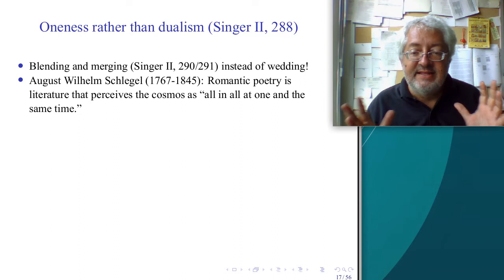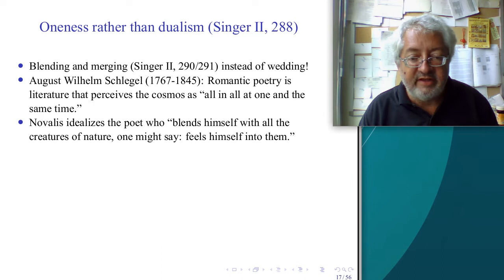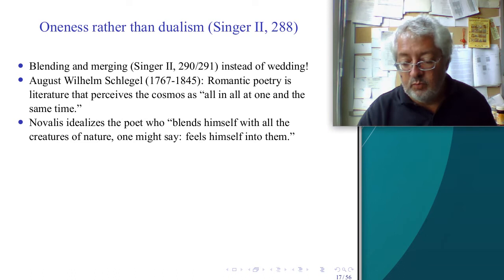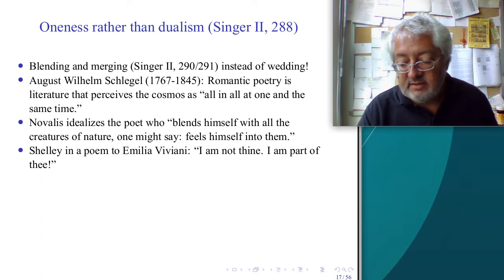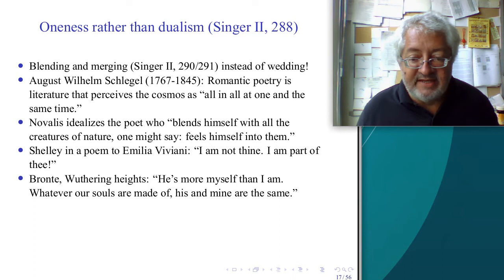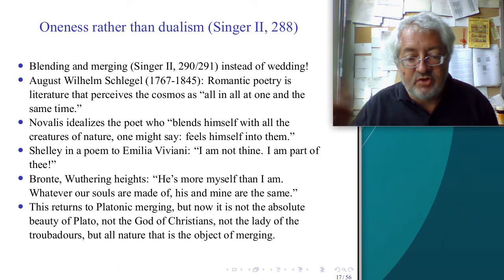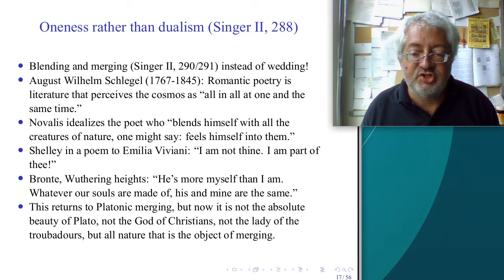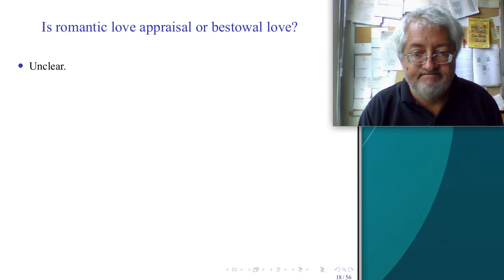Schlegel says: 'Romantic poetry is literature that perceives the cosmos as all in all at one and the same time' — everything is everything else, the limits between things are erased. This is an ecstatic position. Novalis idealizes the poet who blends himself with all the creatures of nature, feels himself into them. Shelley says: 'I am not yours, I am part of you' — and this is the same as Wuthering Heights: 'He's more myself than I am; whatever our souls are made of, his and mine are the same.' The complete identification with another person returns to platonic merging, but now all of nature is the object of such merging.